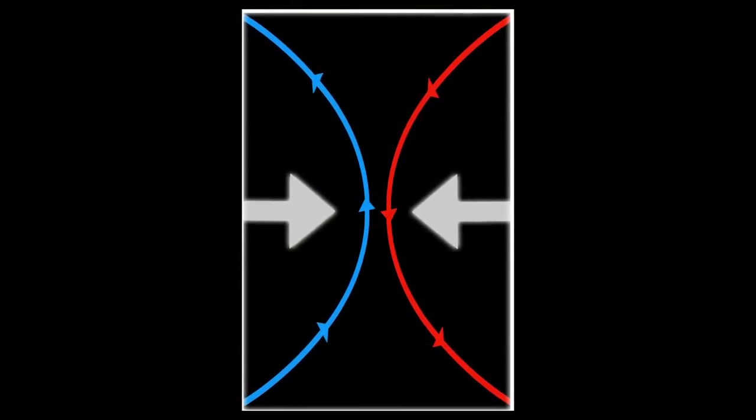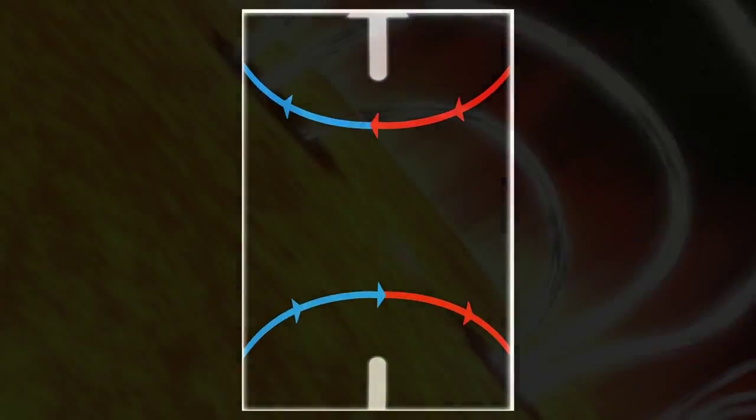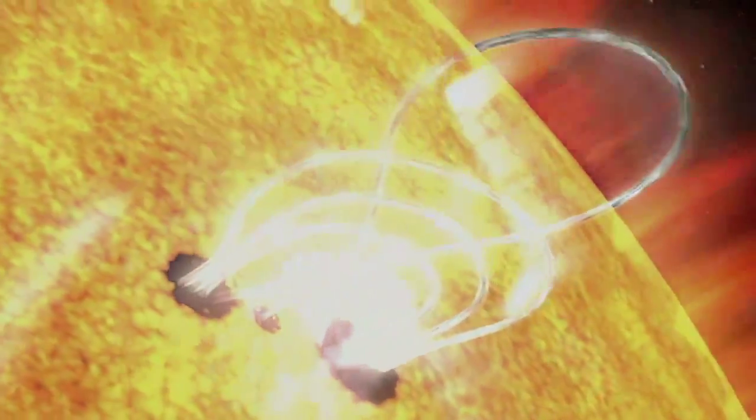Magnetic reconnection is when magnetic fields connect and disconnect, explosively transferring energy. Scientists believe magnetic reconnection drives almost every dynamic event on the Sun, including solar flares.